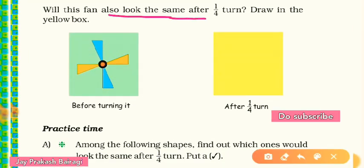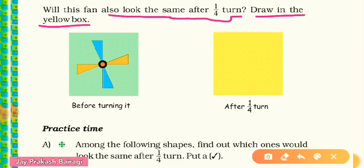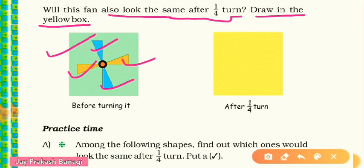Now, will this fan also look the same after one fourth turn? Draw in the yellow box. Let's observe this picture properly. The blades are the same size but colors are different — one blue, then one yellow, then one blue, then another yellow. What will happen in one fourth turn? Let's try to draw it.